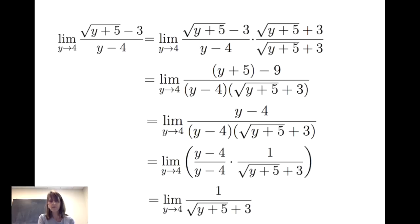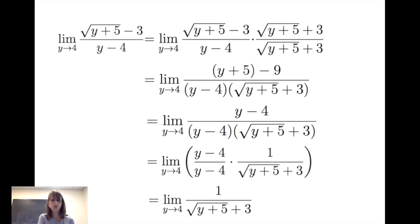At this point we haven't really made use of the limit laws, so these next steps document how I use them to reach the final evaluation. First, I have a quotient, so the quotient rule says I can write the limit of one as y gets close to four divided by the limit of the square root of y plus five plus three as y gets close to four.